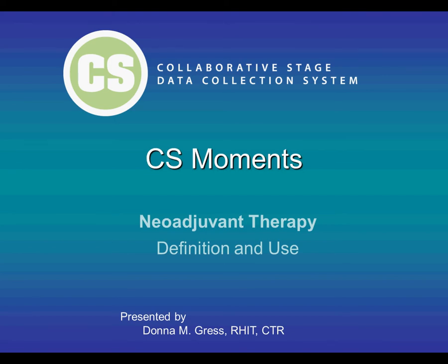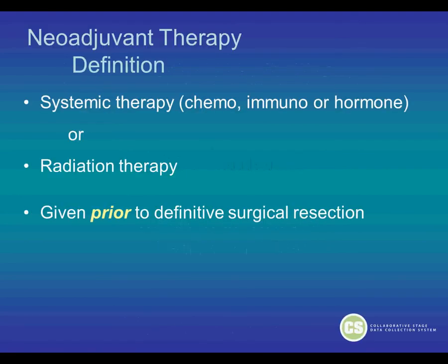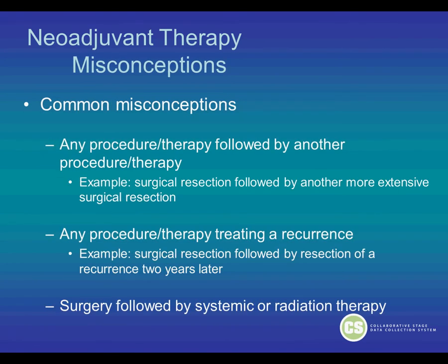This is the CS Moments. Today's topic is neoadjuvant therapy — the definition and the use. I am Donna Grass, AJCC Technical Specialist. The definition of neoadjuvant therapy: it is systemic therapy which can include chemotherapy, immunotherapy, or hormone therapy, or it can be radiation therapy. This treatment is given prior to definitive surgical resection.